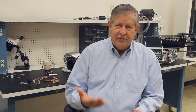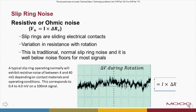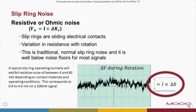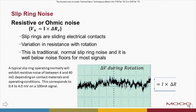Slip rings are sliding electrical contacts and there is some inevitable variation in resistance with rotation. This is traditional normal slip ring noise and it's well below the noise floor for most signals. This oscilloscope trace is a good example of resistive slip ring noise. A typical slip ring will exhibit resistance change of between 4 and 40 milliohms depending on contact materials and operating conditions. This resistance variation results in voltage change or noise in keeping with Ohm's law. For example, on a 100 milliamp signal, a 40 milliohm resistance variation equates to only 4 millivolts, or about 50 dB down on a 1 volt signal. It's important to note that this value is well below the noise floor for almost all signals in this digital world.